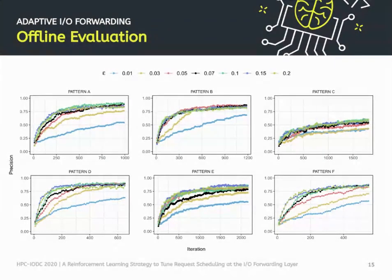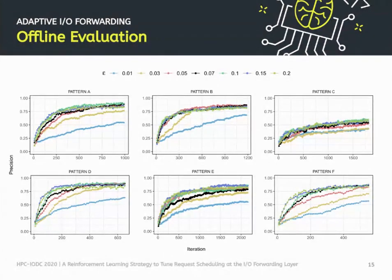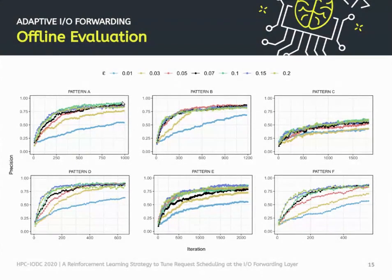For the offline evaluation, the X axis shows the number of iterations — different per pattern because some patterns run faster — and the Y axis shows precision grouped in bins of 10 observations. For patterns A, B, C, and D, we can get pretty high precision depending on the value of Epsilon. For some other patterns we have some difficulty learning the best window size, and I'll explain why.